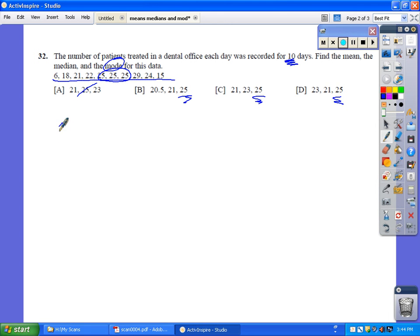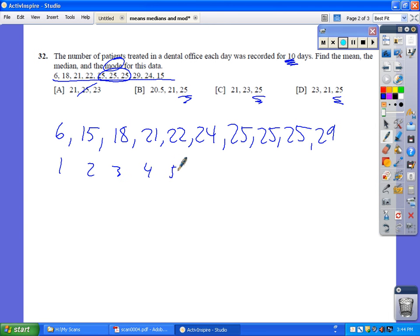So 6, 15, 18, 21, 22, 24, three 25s, and a 29. And there were 10 values: 1, 2, 3, 4, 5, 6, 7, 8, 9, 10.